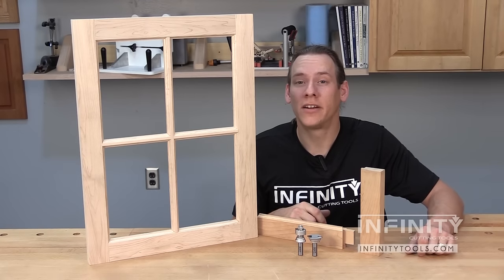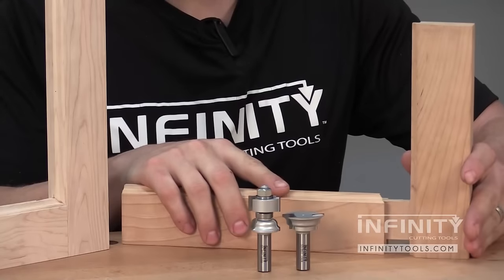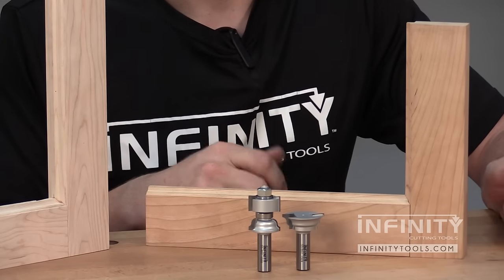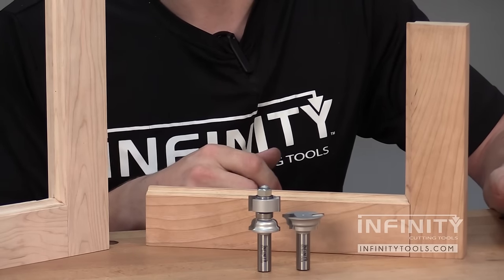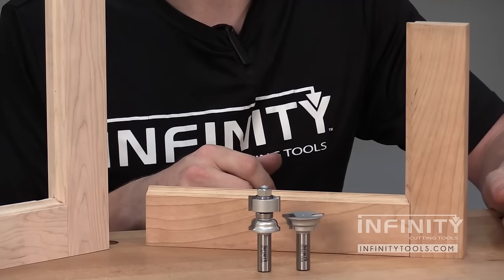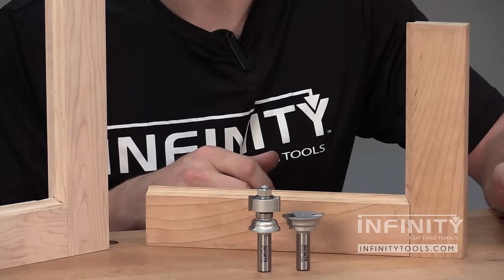With our last little piece of material removed, we're ready to do a dry fit. And if everything fits together correctly, we can go ahead and do our final assembly. That's all the changes that are required to use the Window Sash Junior compared to the standard Window Sash Set.